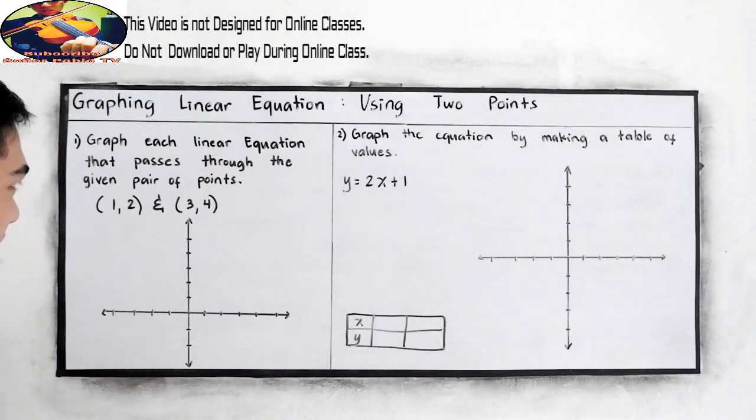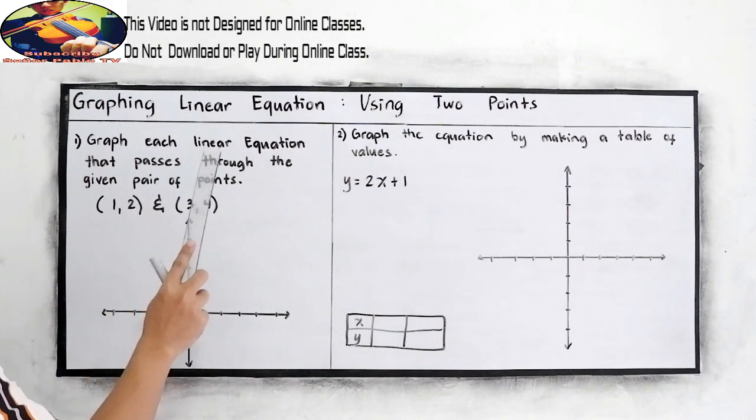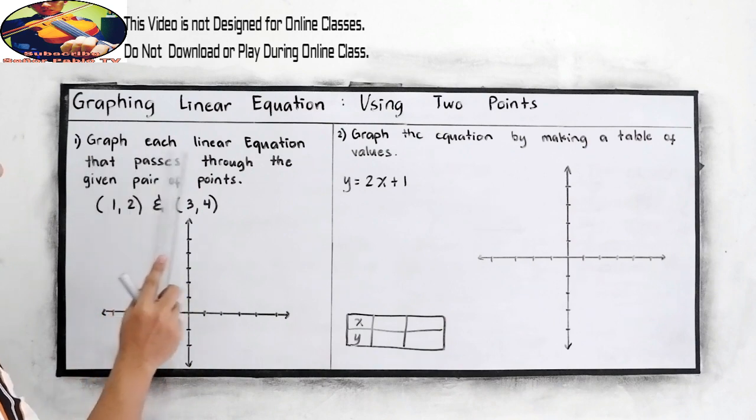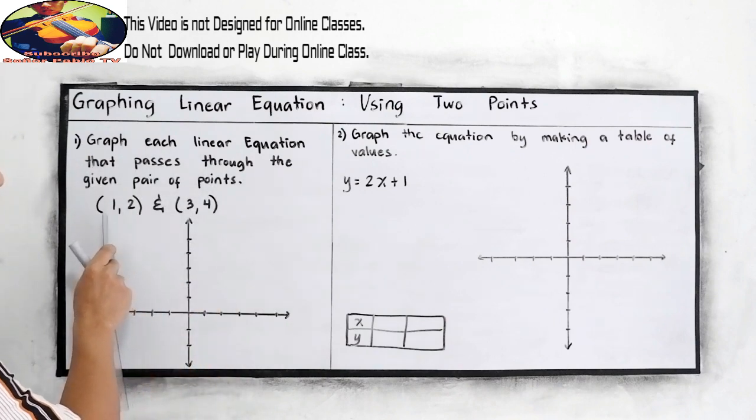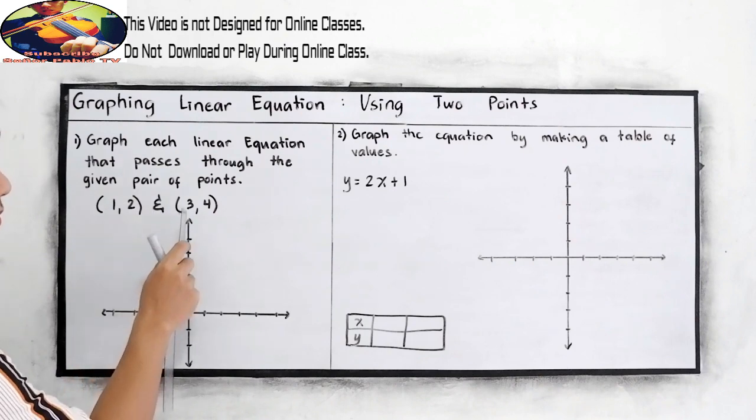Okay, let's try to answer this one. Graph each linear equation that passes through the given pair of points: 1, 2, and 3, 4.